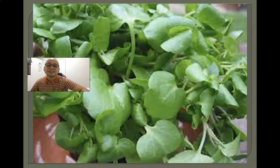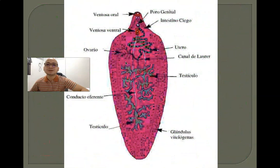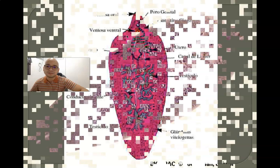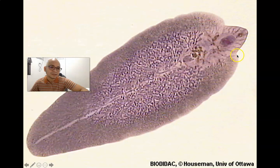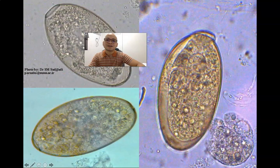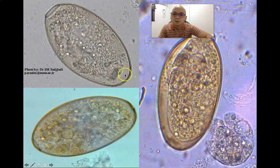These are examples of the first intermediate host and aquatic vegetation where Fasciola hepatica metacercaria may encyst. The parasite has a shoulder-like appearance due to the presence of the cephalic cone. The ova of Fasciola hepatica have an operculum and a well-rounded posterior end, hence the egg-shaped description.